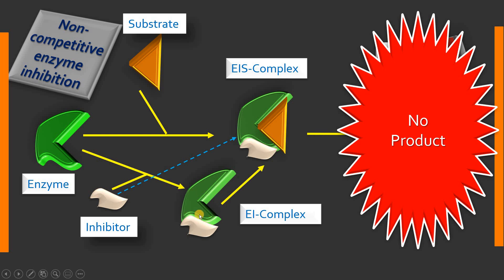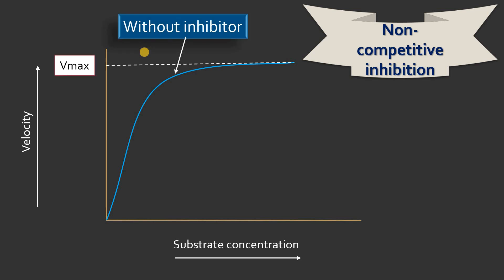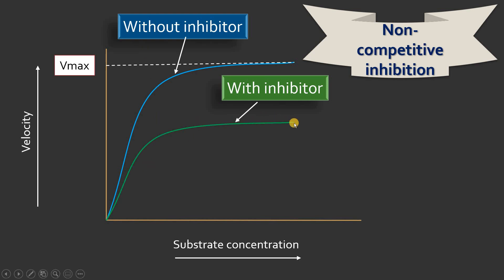Binding of the inhibitor to the enzyme or to the enzyme-substrate complex inactivates the enzyme or decreases its function, so there is no product formation. There is no competition between the inhibitor and the substrate for the active site. When we study this with enzyme kinetics, the normal enzyme-catalyzed reaction without inhibitor shows a hyperbolic curve where we can see maximum velocity — that is zero-order kinetics. If you add a non-competitive inhibitor, there is a decrease in maximum velocity.